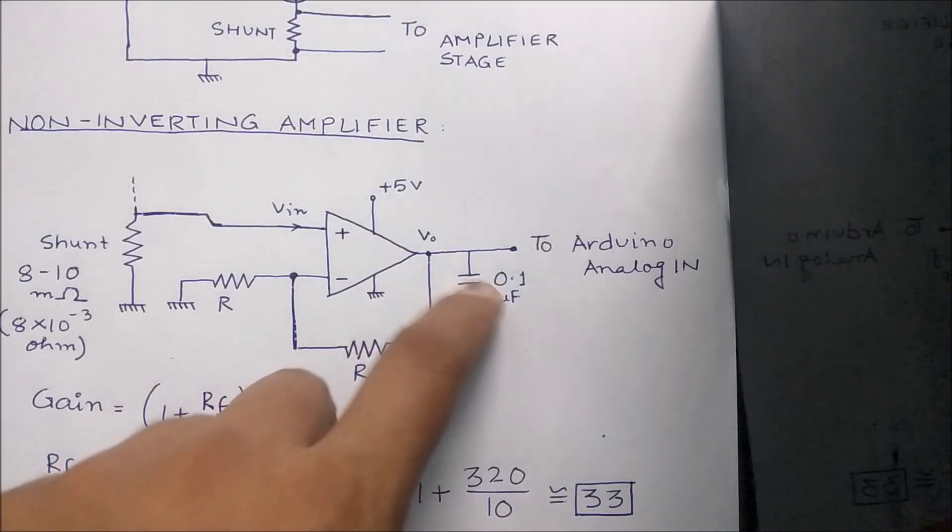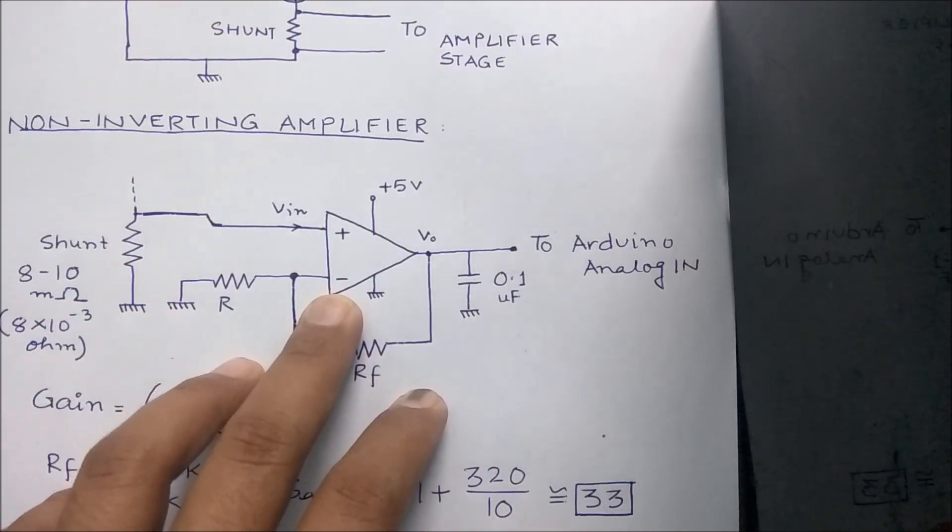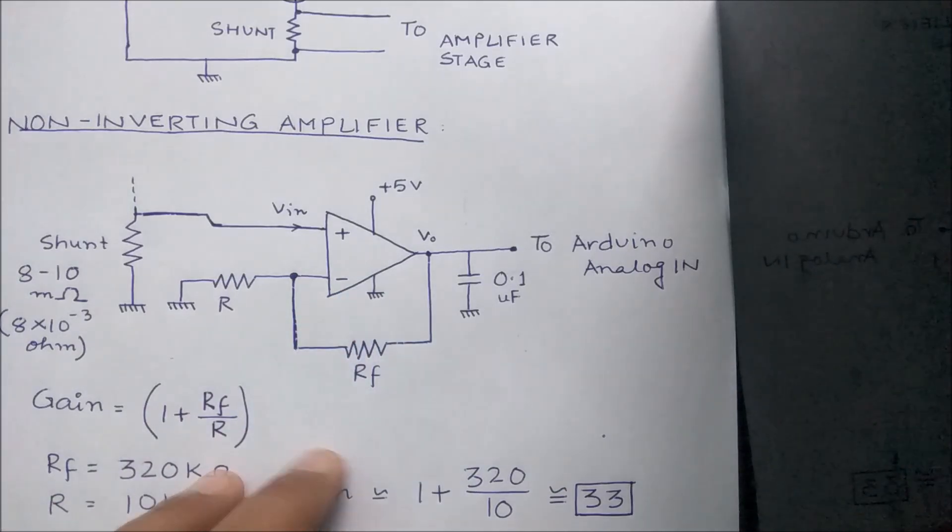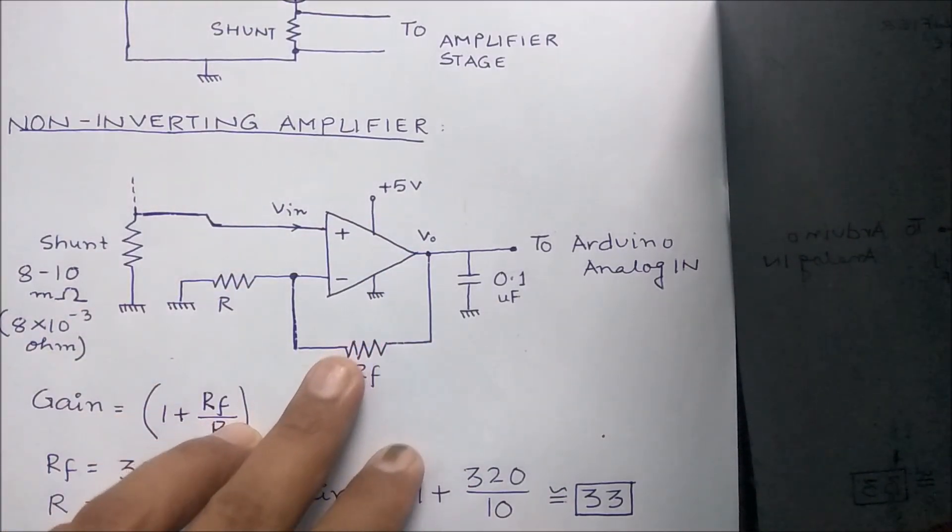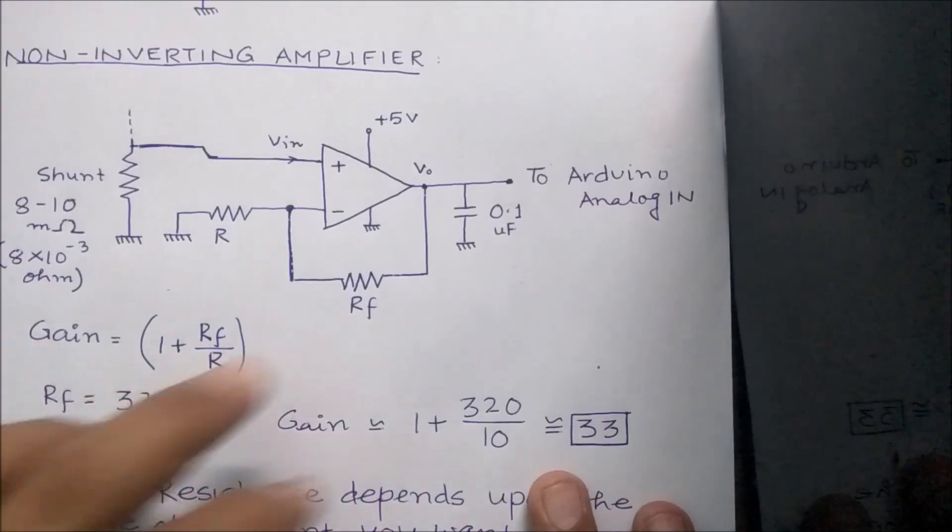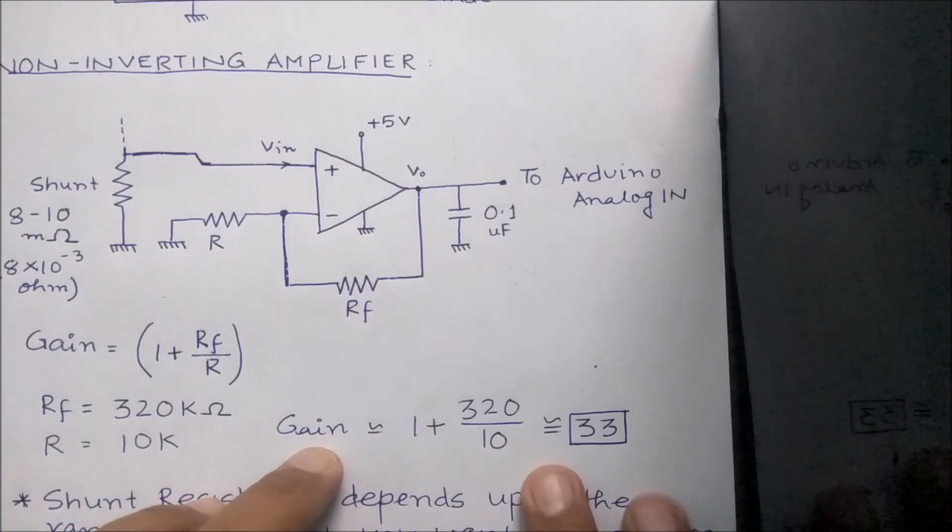This range can depend largely upon the amount of current you want to measure or the range of current you want to measure. For my application, I wanted a resolution of around 100 milliamps and the maximum range of around 10 amps. I think that this around 8 to 10 milliohms of resistance will work just fine for my application.